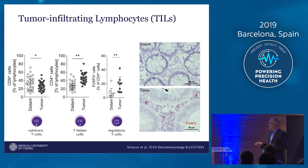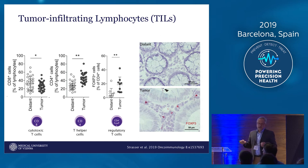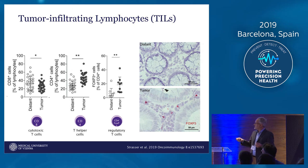Let's take a closer look at the lymphocytes, because there are different subtypes of lymphocytes. CD8-positive effector cells are reduced in the tumor. And we have a strong increase in CD4-positive regulatory T cells, which was also confirmed here by FOXP3-positive staining.